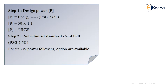Step 1: Design power. The formula is: Design power = P multiplied by FA. Substituting P = 50 and FA = 1.1, the design power is 55 kilowatt.